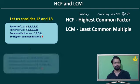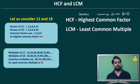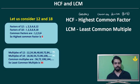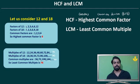Similarly, multiples of 12 are 12, 24, 36, and so on to infinity. Multiples of 18 also go to infinity. Looking at common multiples of 12 and 18, we can see that 36 is the lowest common multiple.